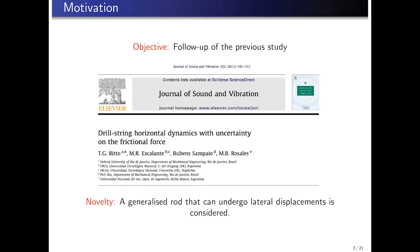The aim of this work is to do a follow-up on a previous publication that is named Drill String Horizontal Dynamics with Uncertainty on the Friction Force. In this publication, the authors studied the axial motion of a horizontal drill string. To do so, a bar model was used, which means that only axial displacements were allowed.